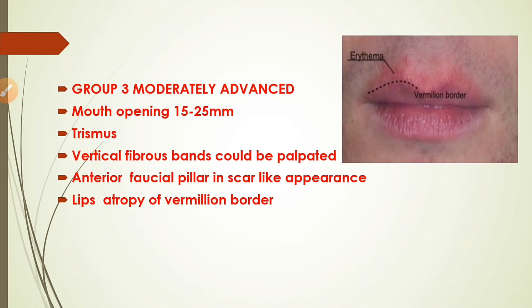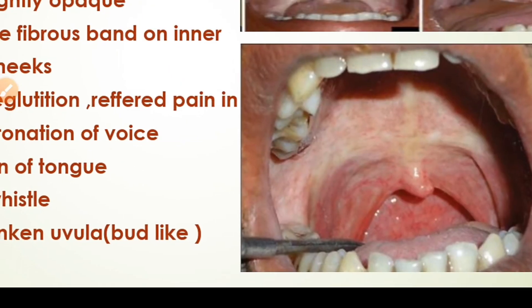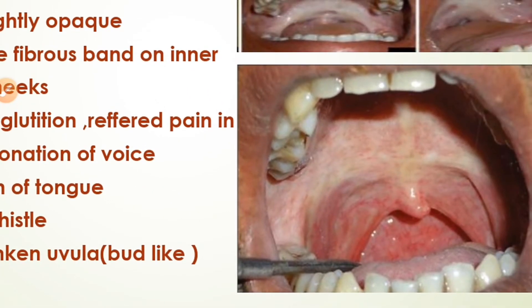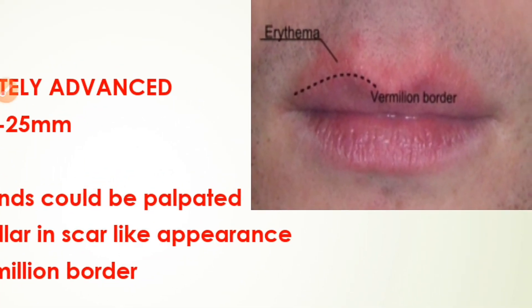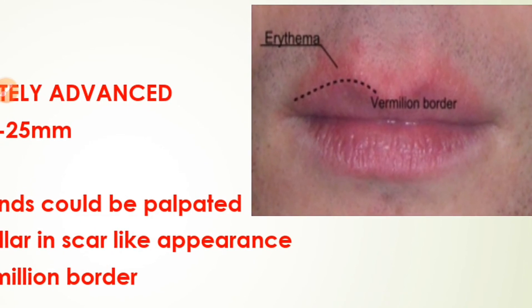Group 3 (moderately advanced stage): mouth opening is reduced to 15–25 mm with trismus. Vertical fibrous bands can be palpated. The anterior faucial pillars have a scar-like appearance — becoming dry with scar-like texture. There is also atrophy of the vermilion border of the lips, where the lip borders start to disappear.